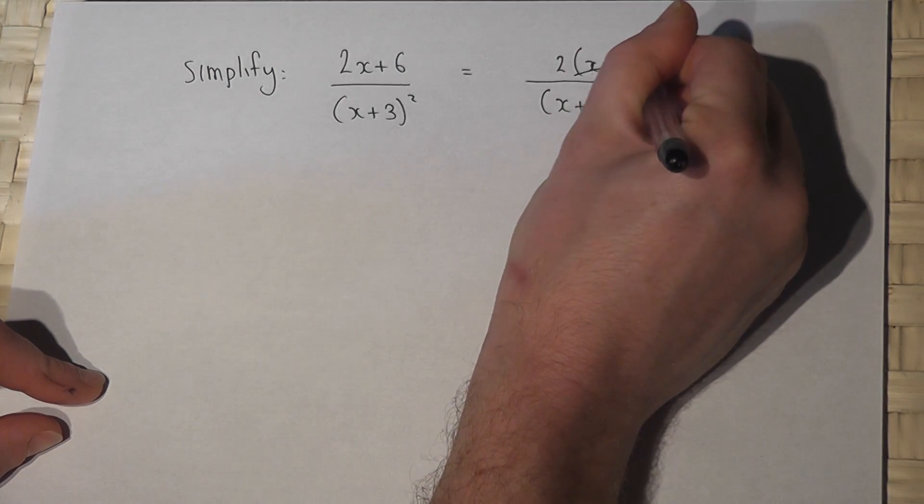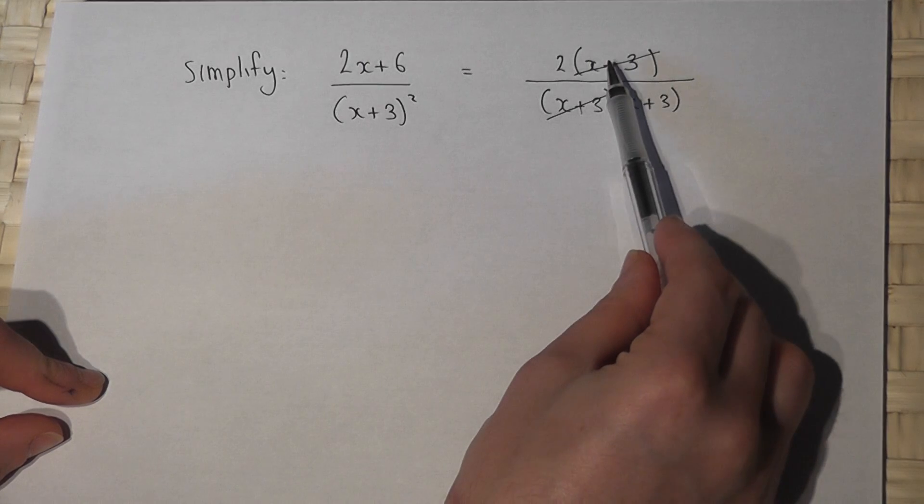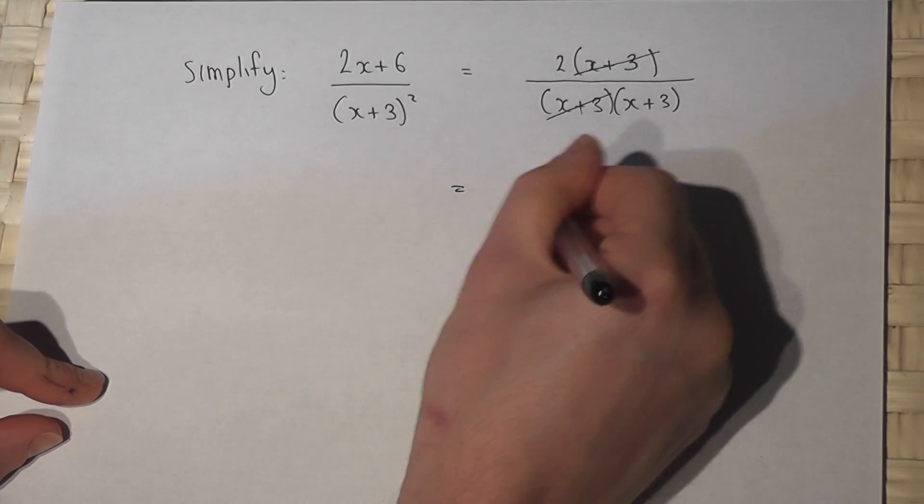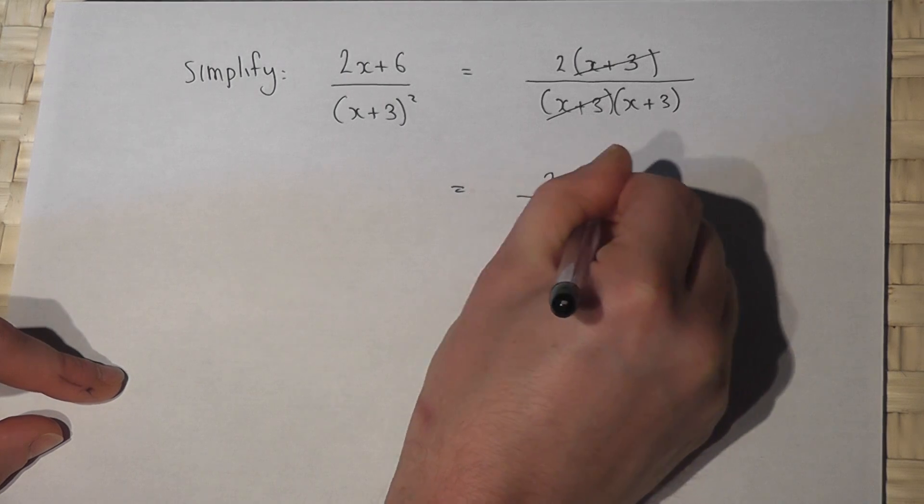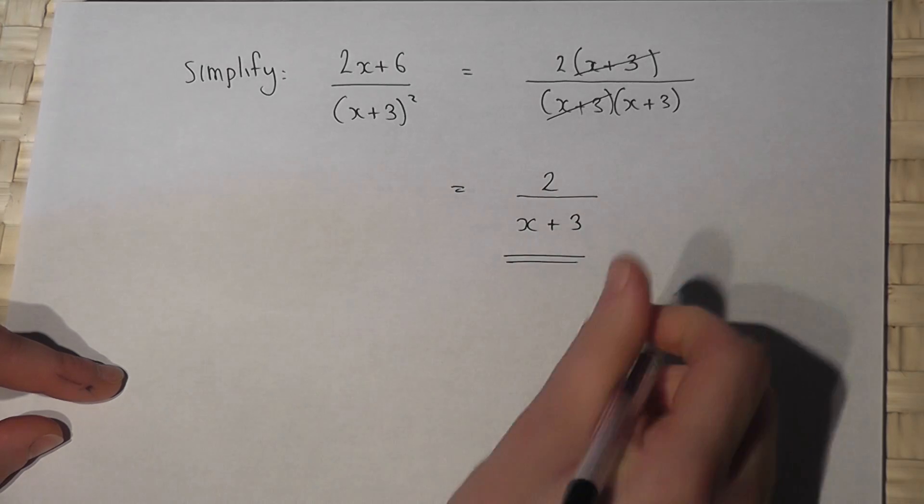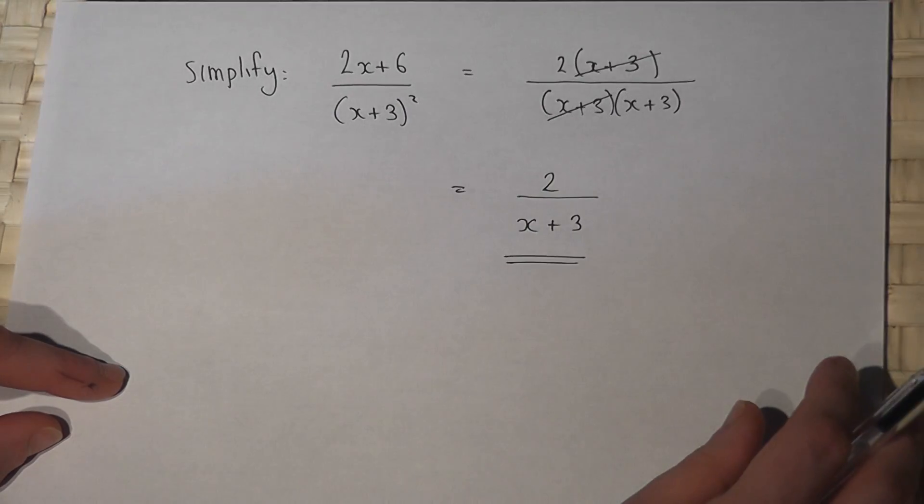There's one x plus three here and one there, so I can cancel off those two brackets. I'm left with a two on the top and an x plus three on the bottom, and this is the fraction simplified.